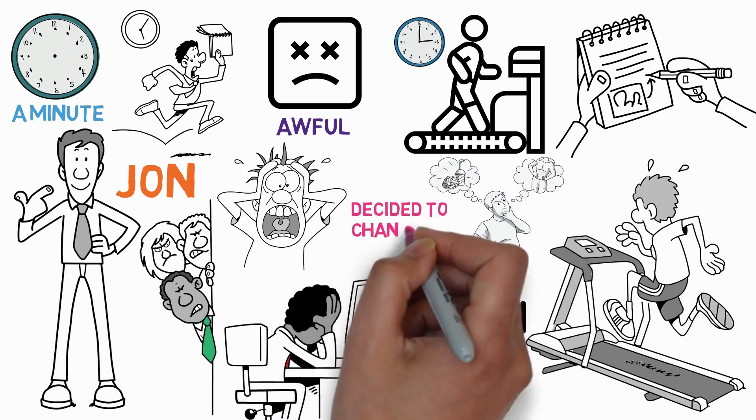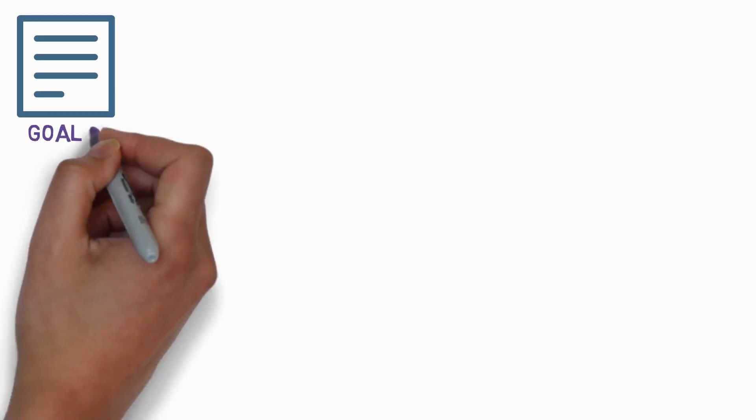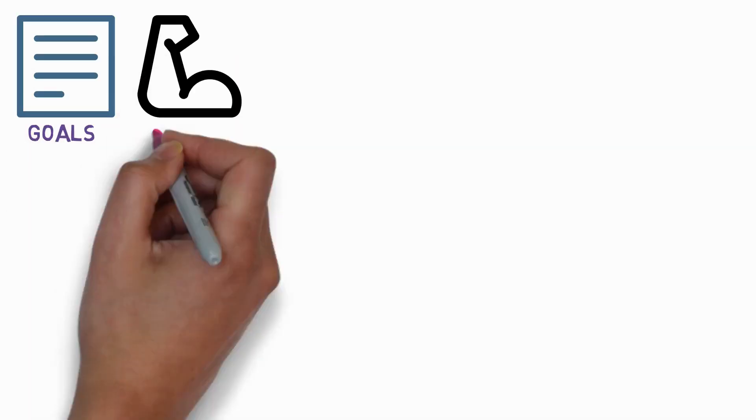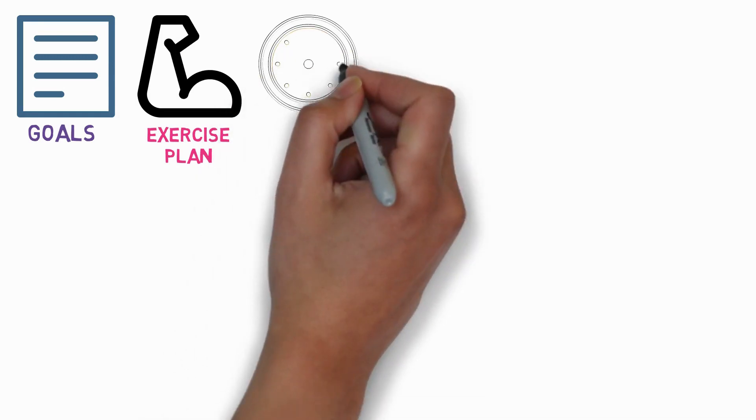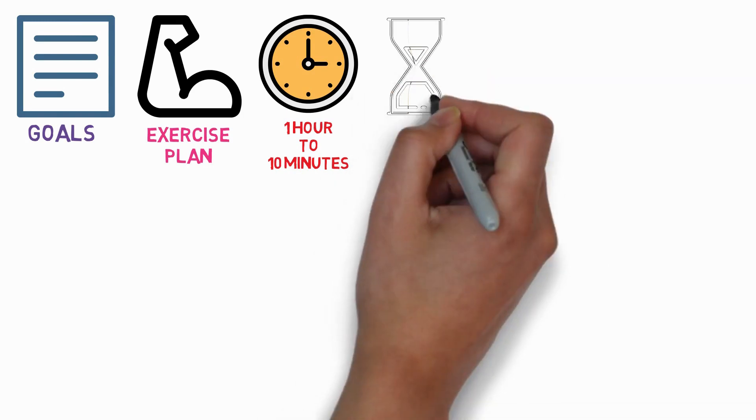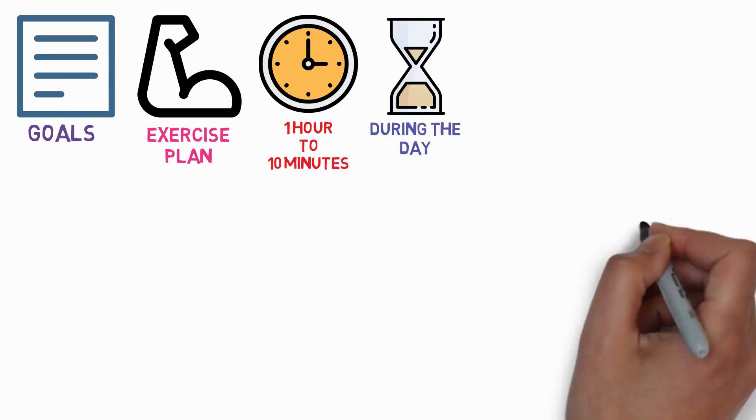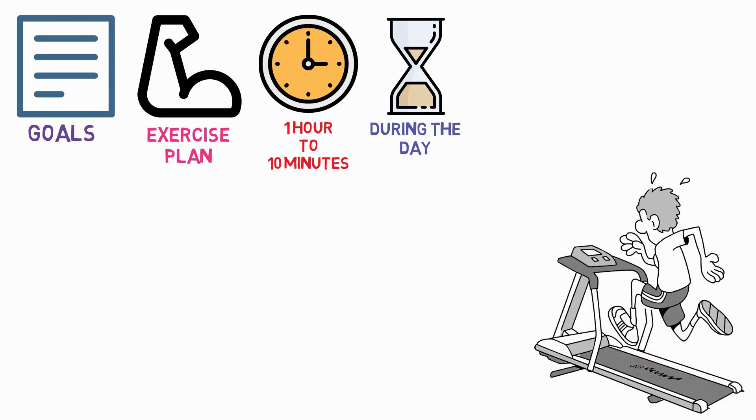But then he decided to change things up. Instead of setting such high goals, he chose to ease his exercise plan. He shortened the time from one hour to ten minutes. This way, no matter what happened during the day, he would always be able to meet his fitness objective.